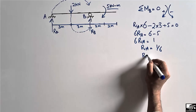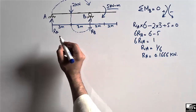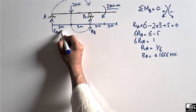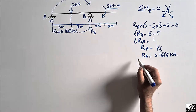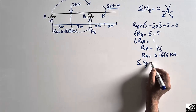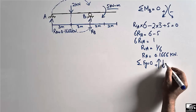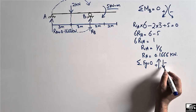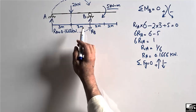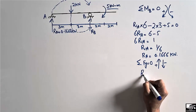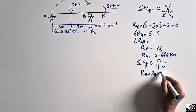So 6RA equals 1, which means RA equals 1/6, giving RA equal to 0.1666 kN. This is the support reaction at support A. To find RB, we use the equilibrium equation: summation of all vertical forces equals zero. Upward forces are taken as positive and downward forces as negative. The upward forces are RA and RB, and the downward force is 2 kN.